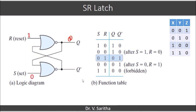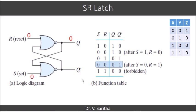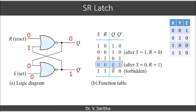If we had Q=0 and Q-bar=1 and then give S=R=0 again, it similarly preserves that state. The reason for showing S=R=0 multiple times is to demonstrate that when S and R are both 0, the circuit preserves the previous state. When S=1 and R=0 gives Q=1, then applying S=R=0 keeps Q=1. When R=1 and S=0 gives Q=0, then applying S=R=0 keeps Q=0. The circuit is preserving its state.